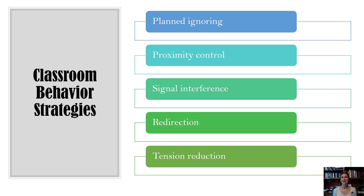Signal interference is when you give some type of nonverbal cue for the child to stop engaging in the inappropriate behavior — whether it be a glare, eye contact, or maybe you hold up a number to make them aware of which classroom rule they need to be following. Those are all signal interference strategies.